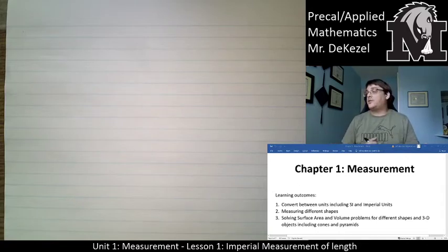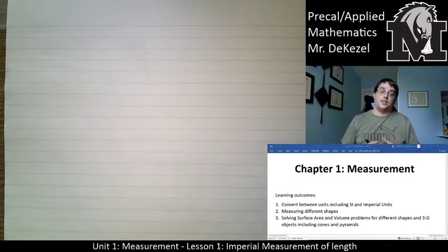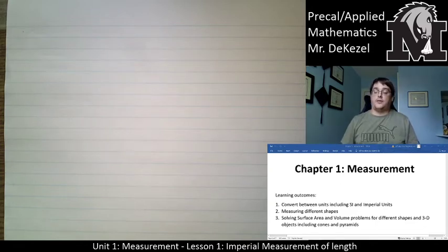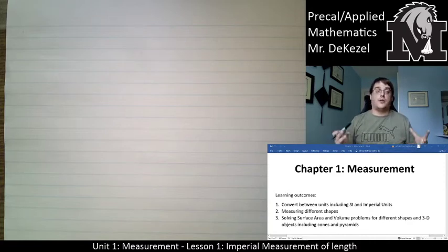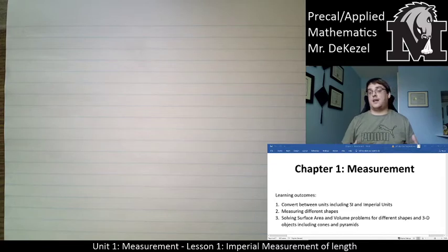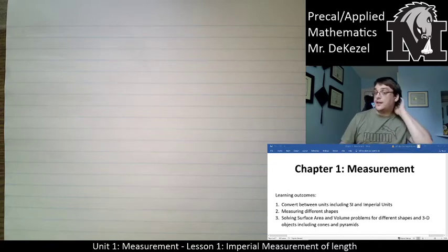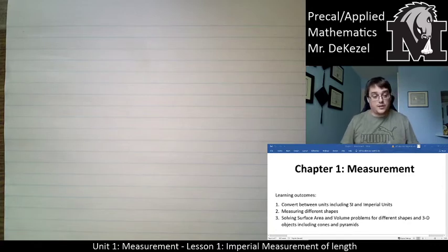Chapter 1 is all about converting different units between each other. That will include SI units, but we're going to focus on imperial units today. We're going to measure different shapes and also solve surface area and volume problems for any shape you can imagine. Essentially, we're going to go right to composite objects — triangles, rectangles, circles, cones, and cylinders all together. But we'll start with the easy stuff for now.